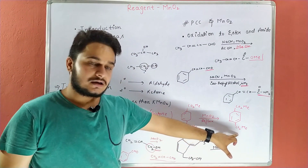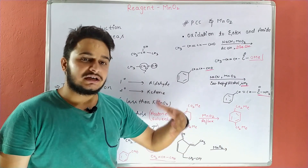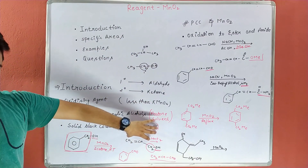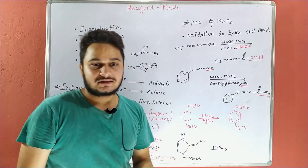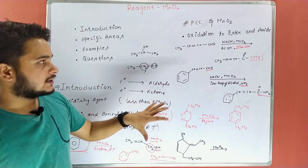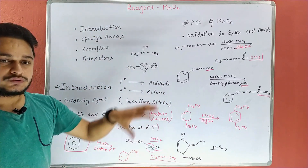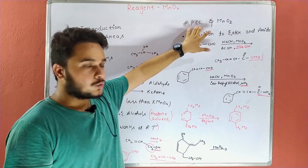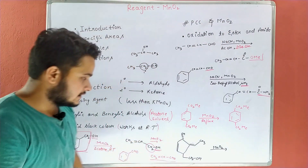MnO2 is also used for aromatization, but the condition changes slightly. जितनी भी reactions होती हैं वो room temperature पर होती हैं, but in the case of aromatization, हम इसको reflux करते हैं — मतलब heat करते हैं — तब aromatization होता है। तो MnO2 कहाँ कहाँ work करता है यह इसके areas हैं। जैसा मैंने बताया, PCC सबको करेगा but MnO2 only allylic और benzylic को।